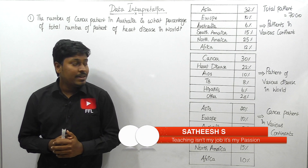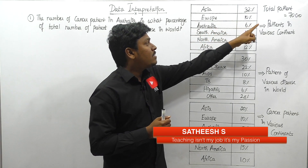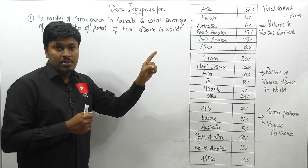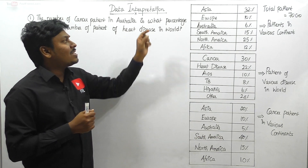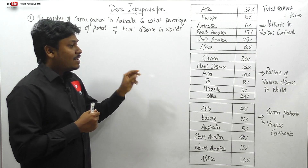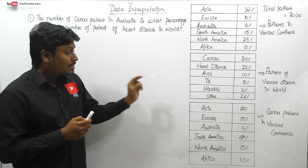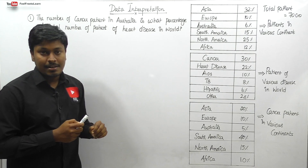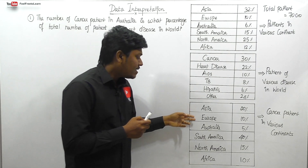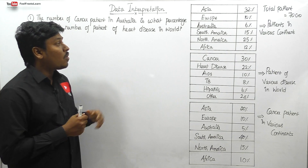Moving on to DI number seven, we have three table charts. At the top, the total patients are 70 crores. The first table chart shows patients in various continents: Asia has 32%, Europe 10%, Australia 6%. The second chart covers various diseases — cancer, AIDS, TB, and others. The third chart specifically shows cancer patients in various continents: Asia, Europe, Australia, South America, and North America.